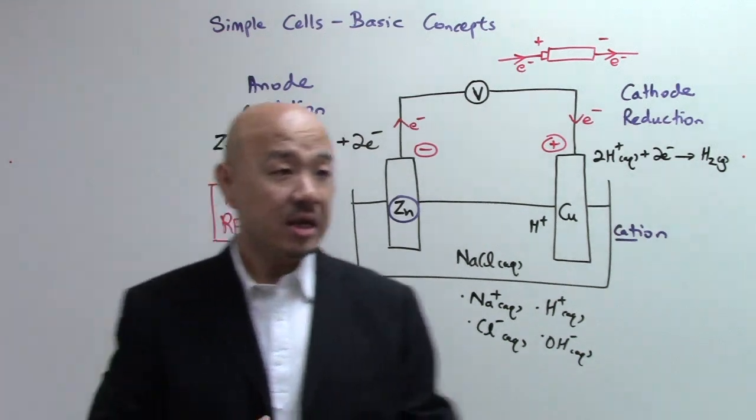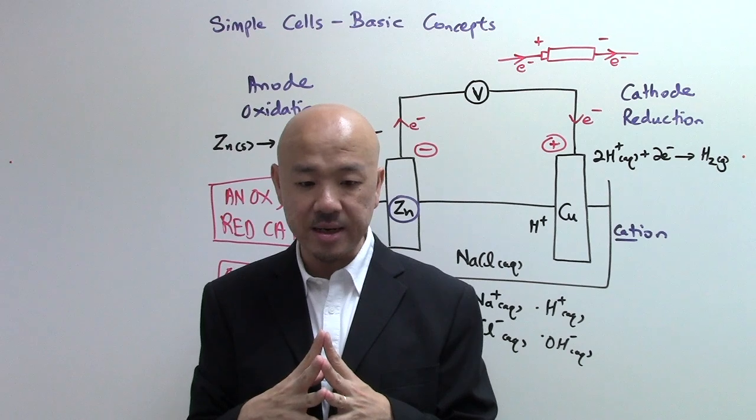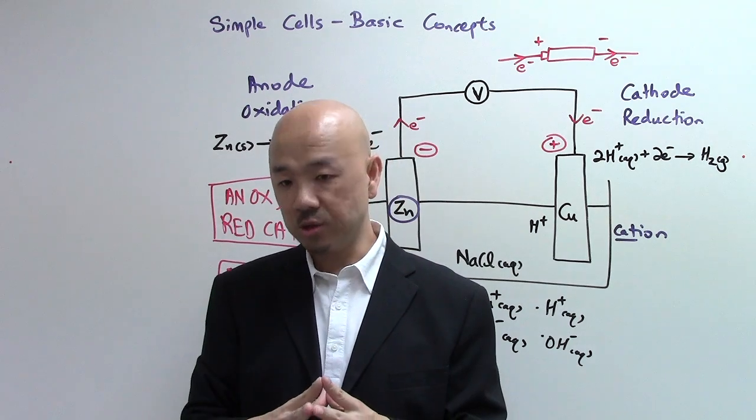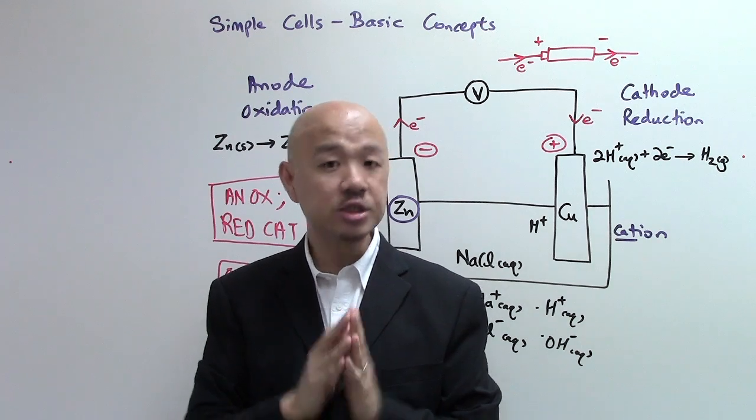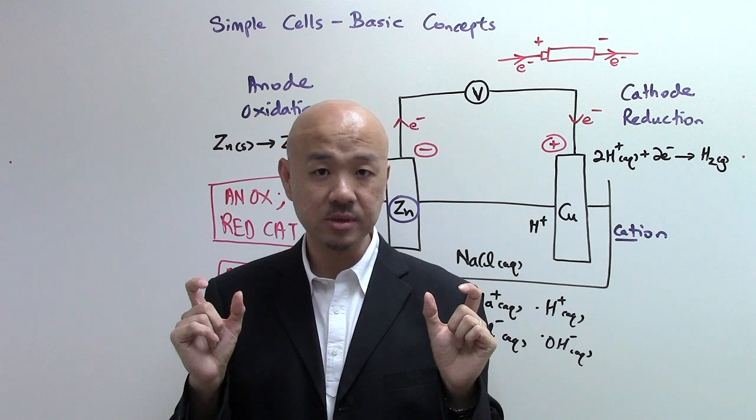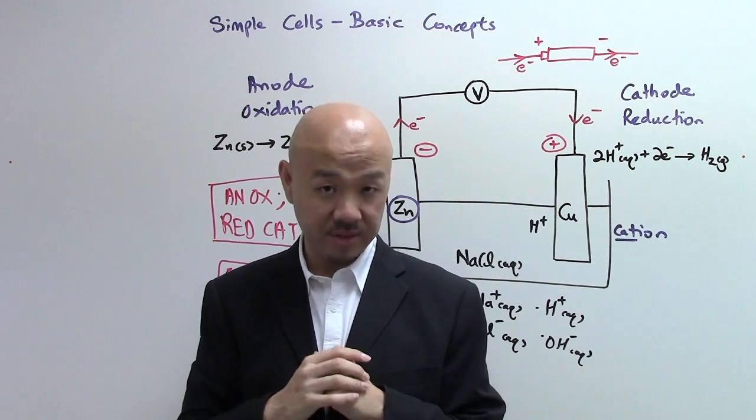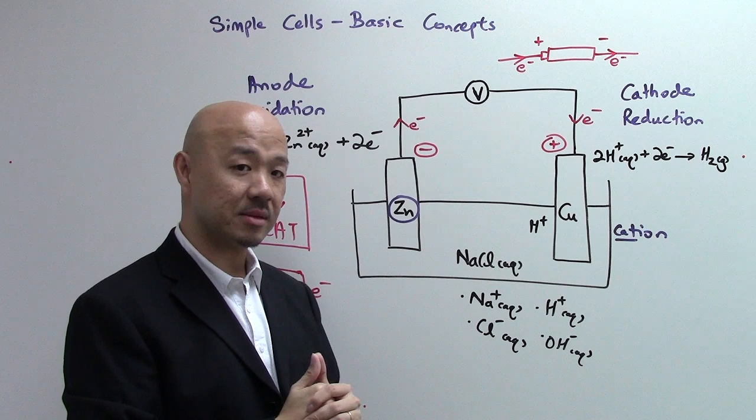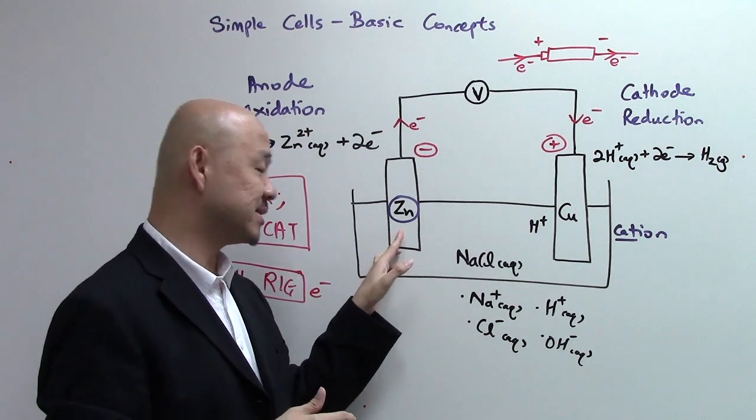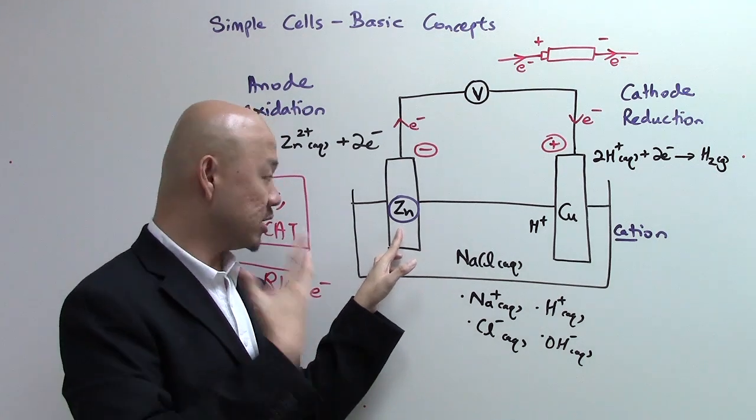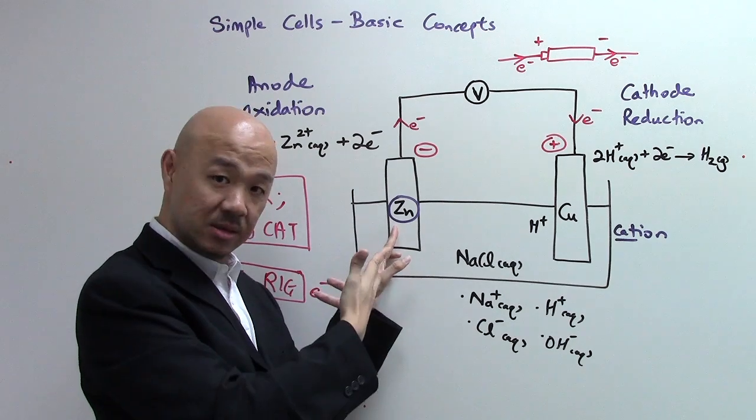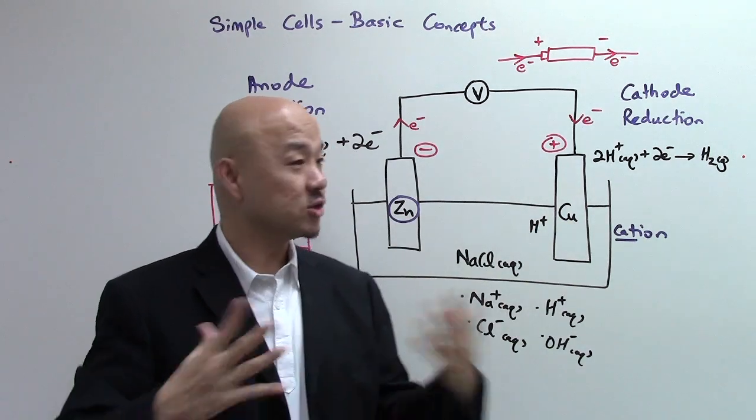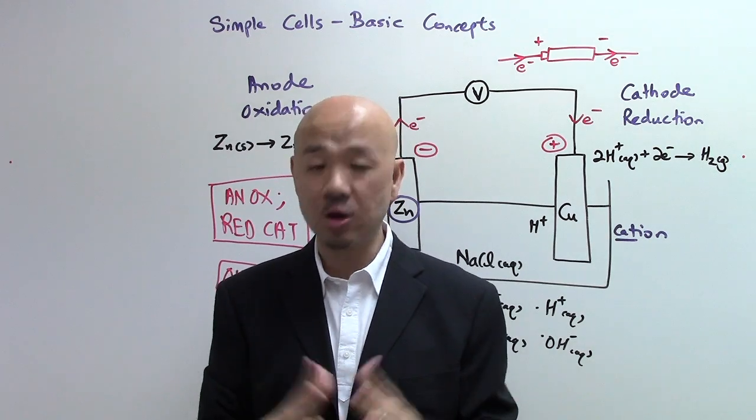Last but not least, in simple cells the only way to increase the amount of electricity, which means its voltage or its current, is to change the electrodes such that the difference of the two metals is greater in the reactivity series. One way to make this a better simple cell in terms of electricity generation is to change the zinc metal to magnesium, because magnesium is more reactive than zinc. There will be greater difference in terms of reactivity when you reference it to copper.